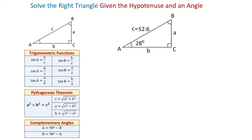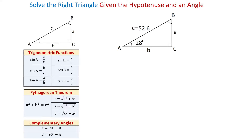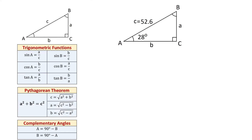In this video, we will solve a right triangle given the hypotenuse and an angle. In the given triangle, the hypotenuse C is 52.6 units and angle A is 28 degrees.